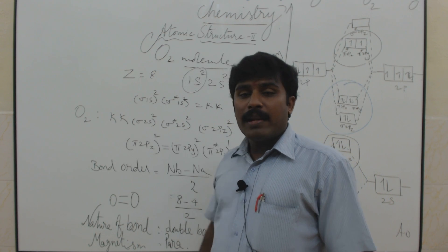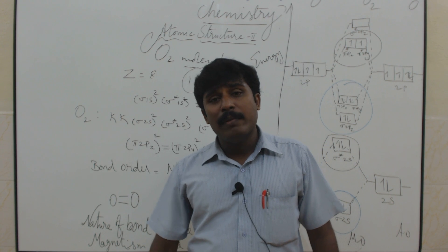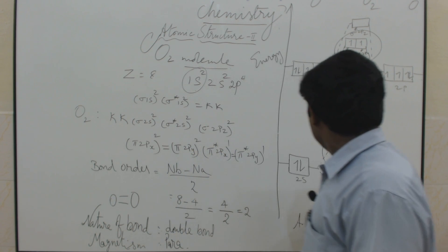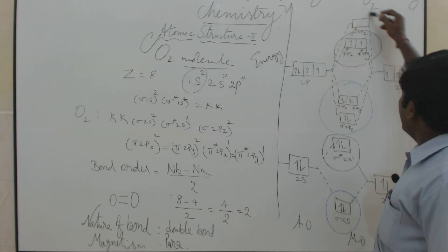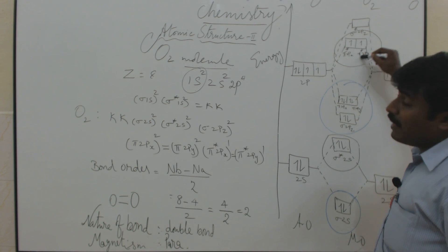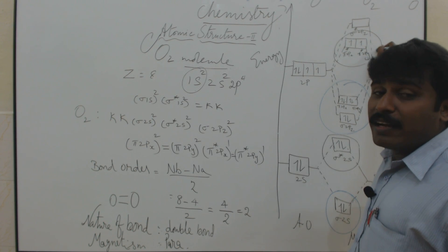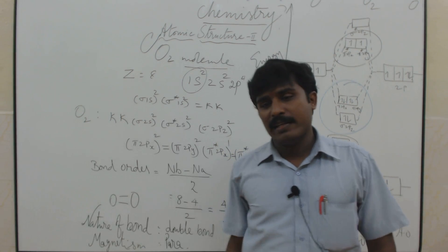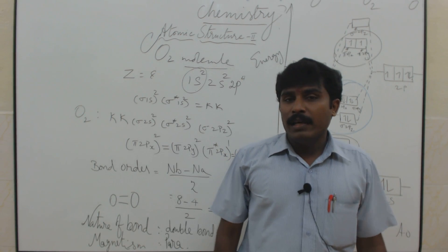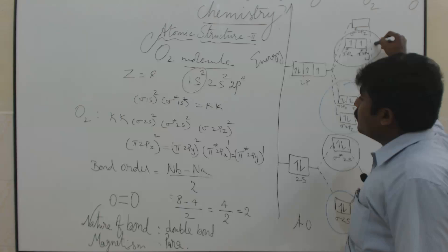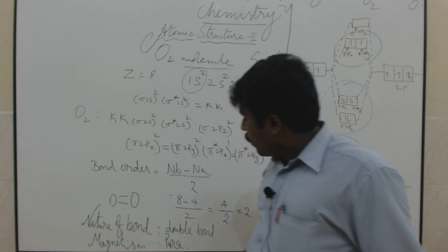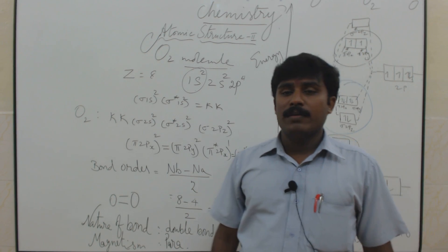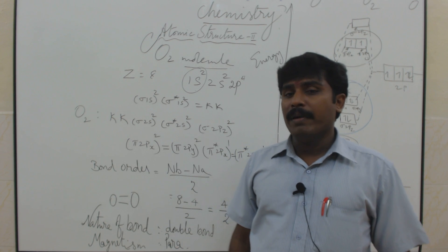Magnetic character: paramagnetic. Why paramagnetic and not diamagnetic? Because unpaired electrons are present. Any species containing unpaired electrons must have paramagnetic character. Here, 2 unpaired electrons are present, so this is an example of paramagnetism.